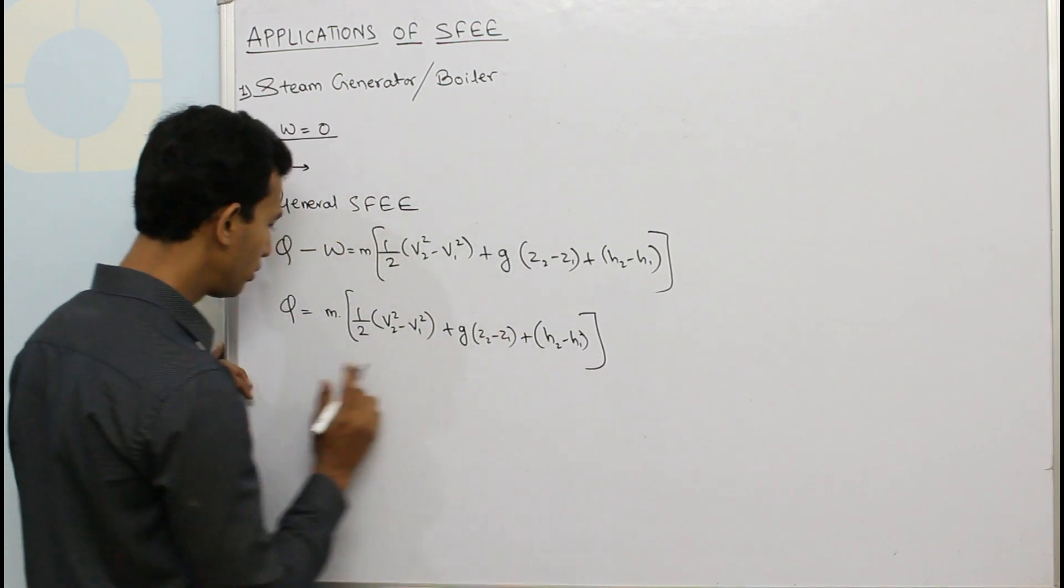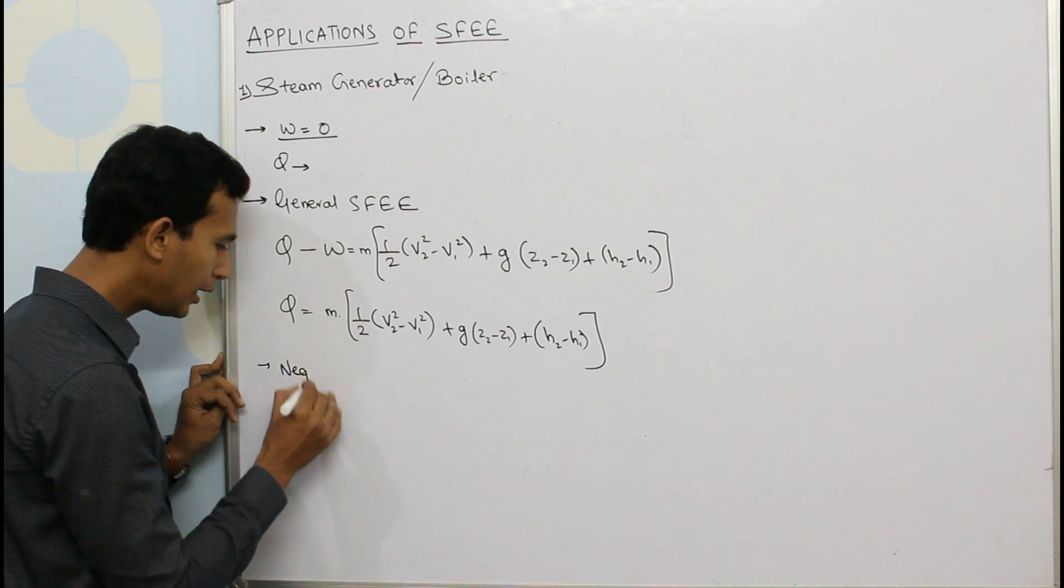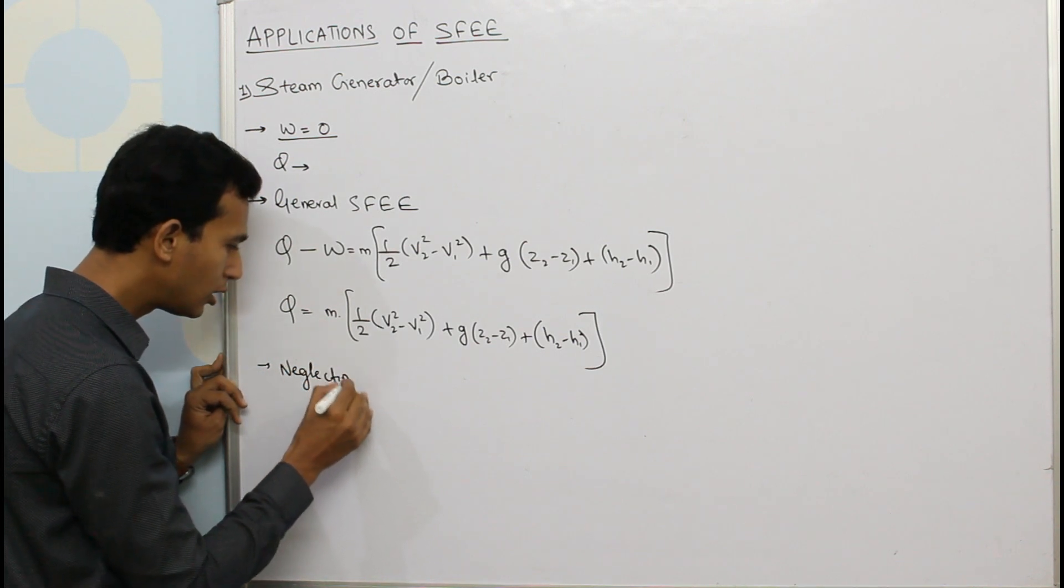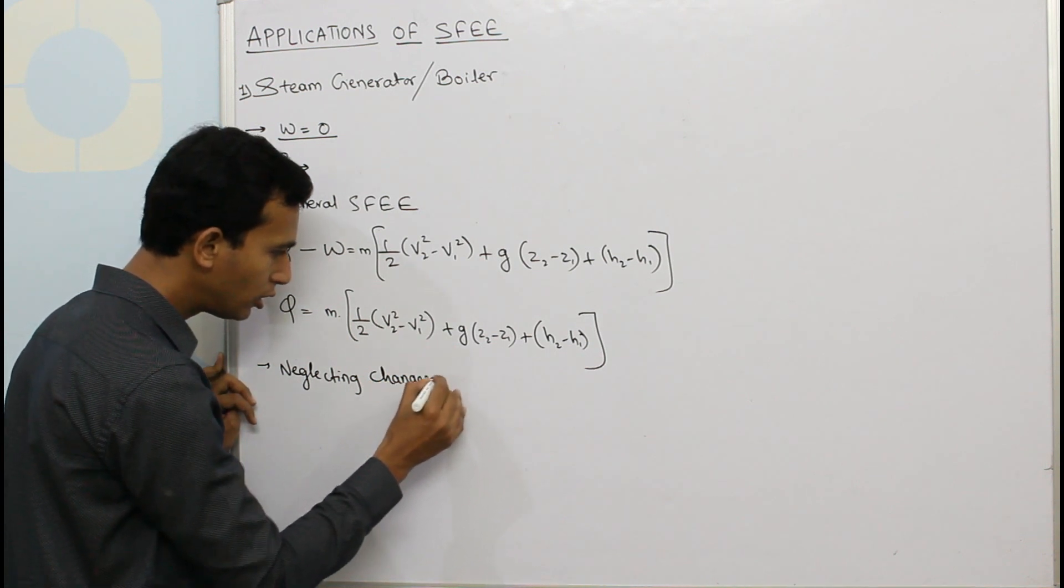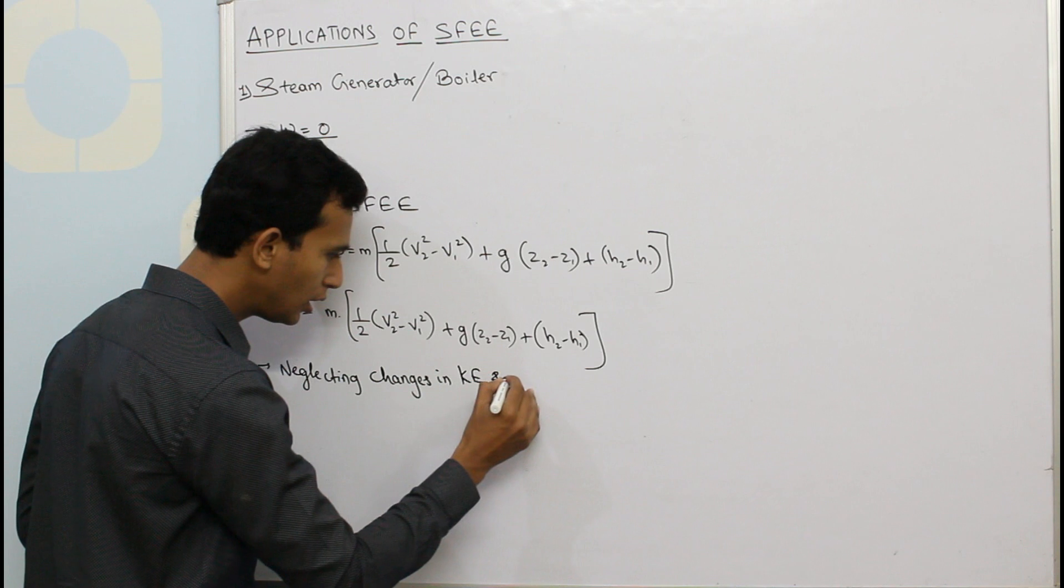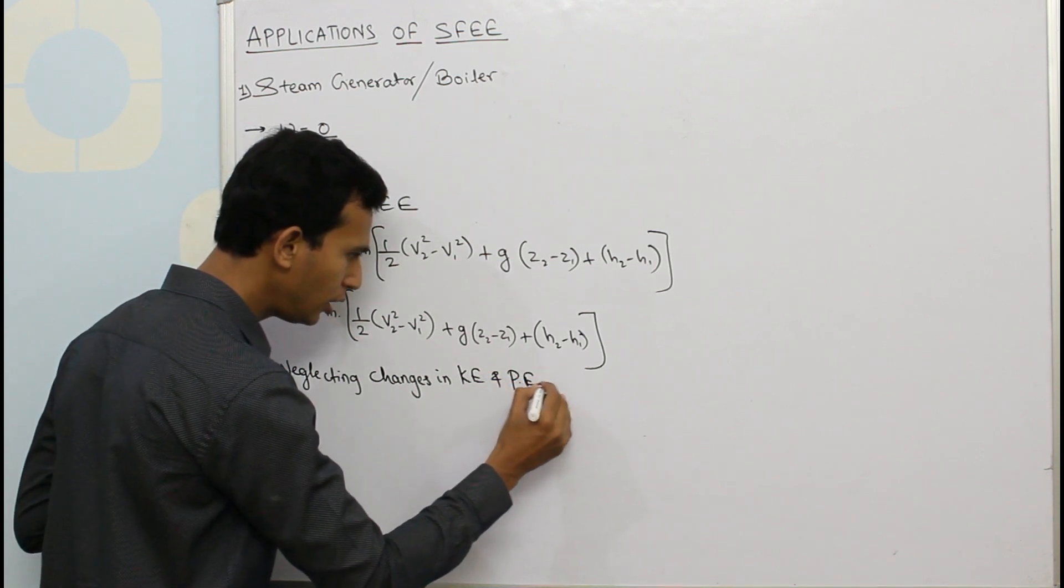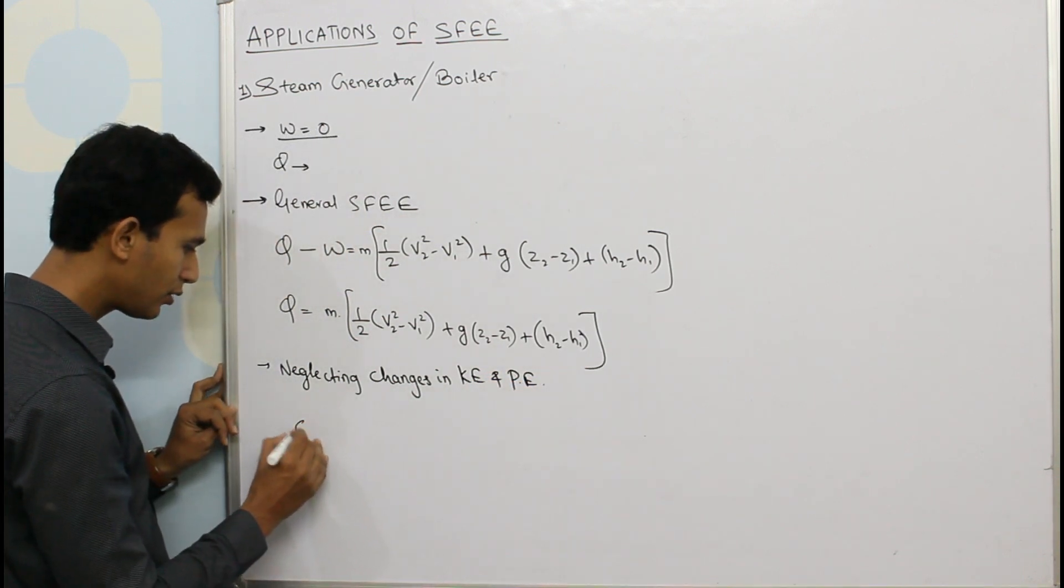So here I can say that neglecting changes in kinetic energy and potential energy, we have Q equals m into bracket H₂ minus H₁.